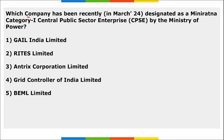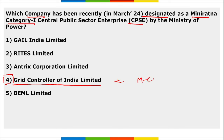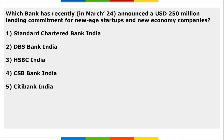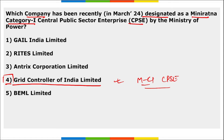Grid Controller of India Limited has been recently designated as a Mini Ratna Category 1 CPSE by the Ministry of Power. The criteria for this category requires the company to have made profit for the last three consecutive years, with a pre-tax profit of ₹30 crore or more in at least one of those three years.